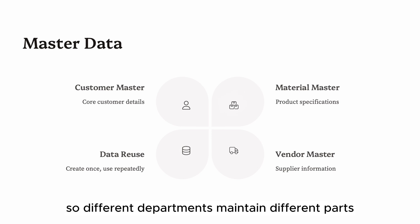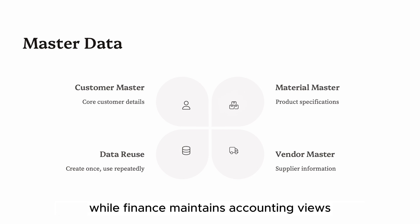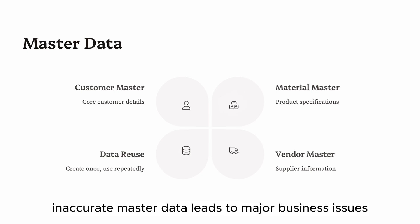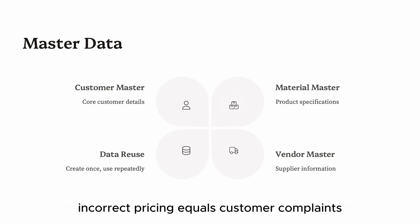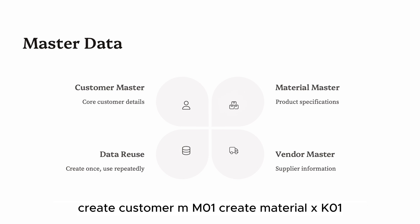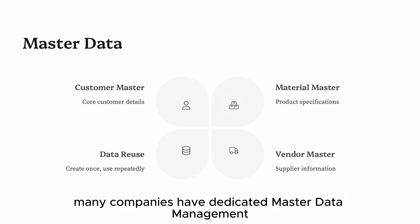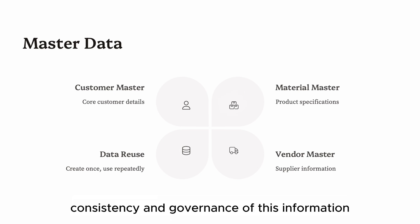The vendor master stores information about suppliers, referenced in procurement activities, invoice processing, and payments. Master data is often structured in views so different departments maintain different parts — for example, procurement maintains purchasing data while finance maintains accounting views. Inaccurate master data leads to major business issues: a wrong delivery address equals delayed shipments, incorrect pricing equals customer complaints, and inconsistent naming equals duplicate entries.